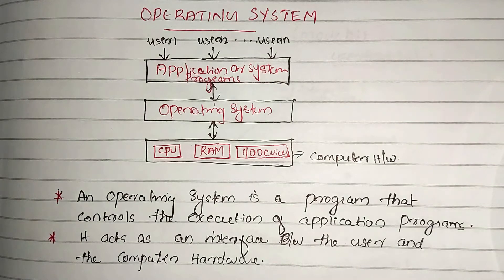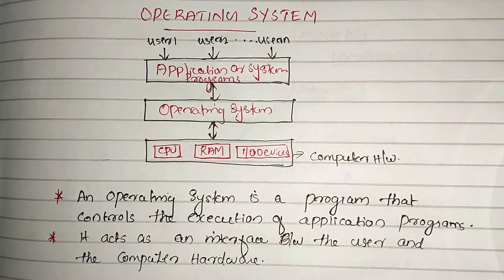What is an operating system? We can use the operating system — examples include Windows, Linux, Ubuntu, and on mobile phones, Android.